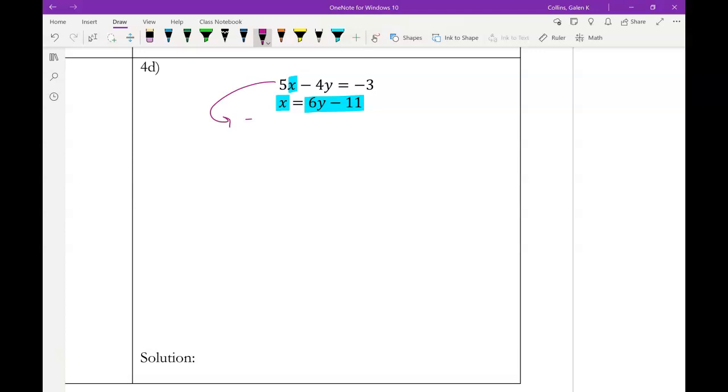So I'm going to take my top equation and substitute 6y minus 11 where x was. Remember, always we substitute into parentheses, minus 4y equals negative 3. So every other piece of my top equation should be there, right? So like this was everything in my original equation. The only difference is where there was an x before, we now have a 6y minus 11.